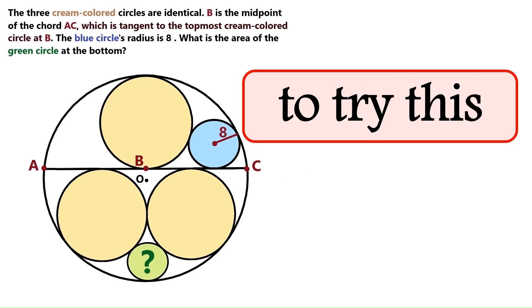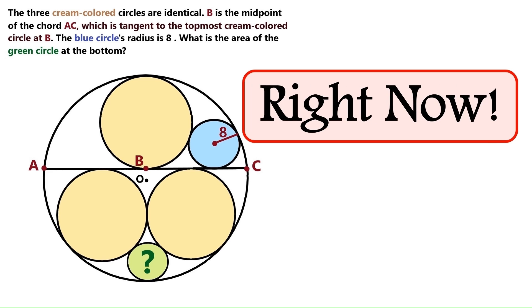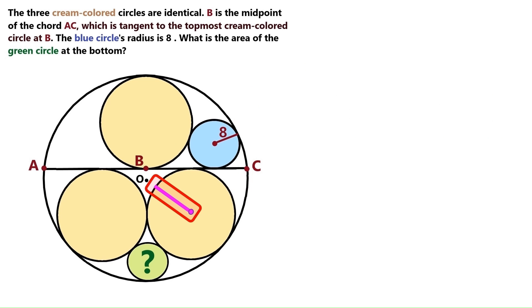So if you'd like to try this on your own, now is the time to pause the video, because I'm starting to solve it right now. Let's put a radius for the cream-colored circle here, and we'll call it x. Let's put another radius x here, and here.